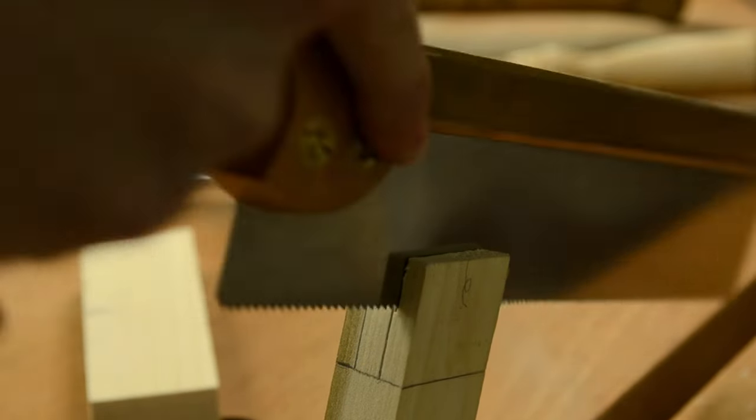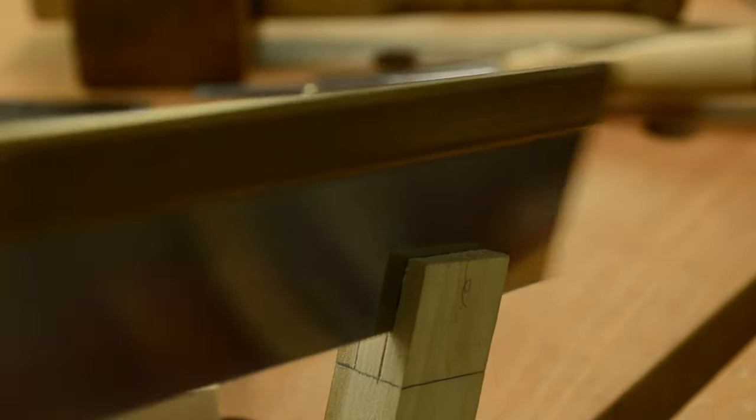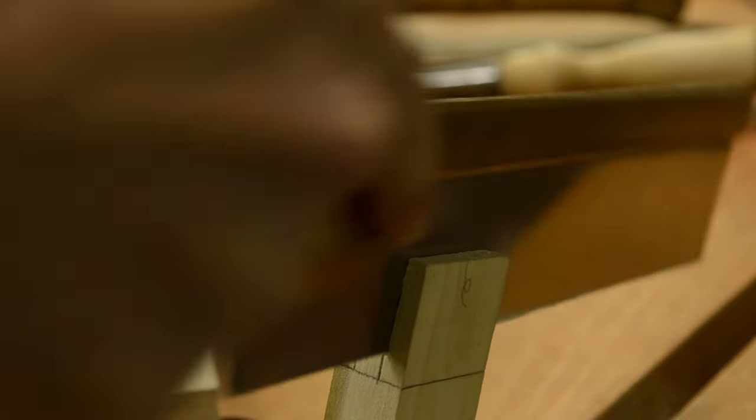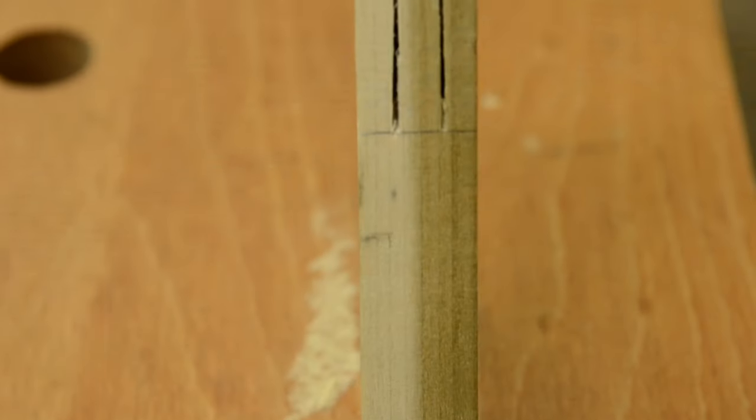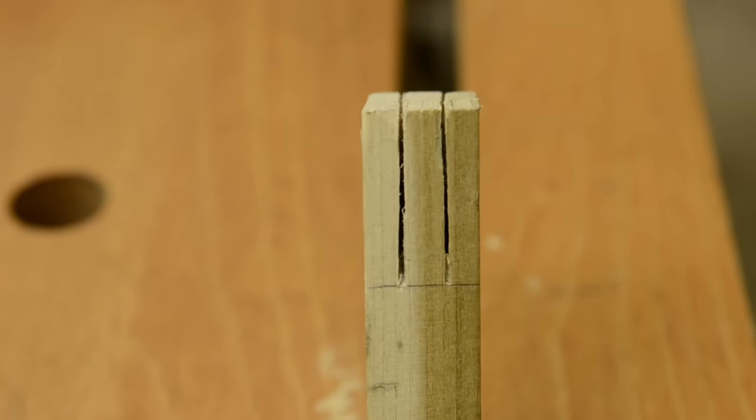So you can just cut horizontally down now all the way, staying just kissing the line, bisecting it and then stop on that shoulder line or baseline as well. After you've cut the other side, this is what your tenon should look like.